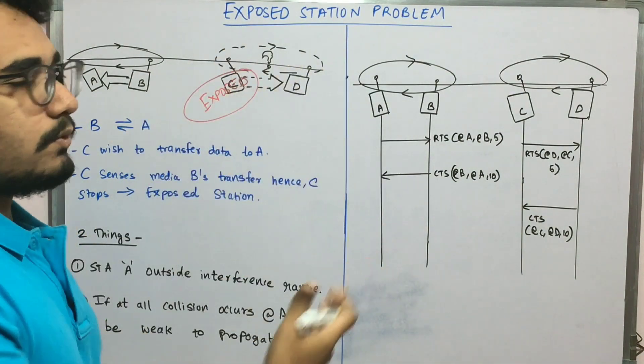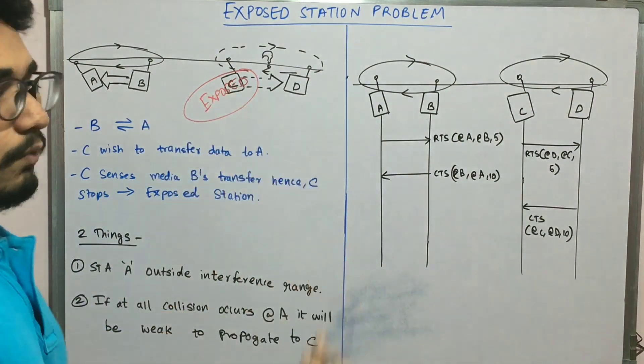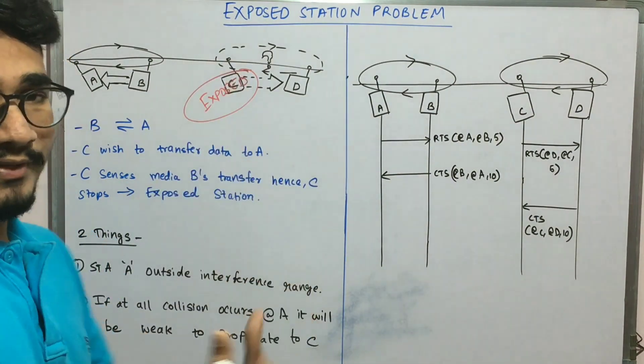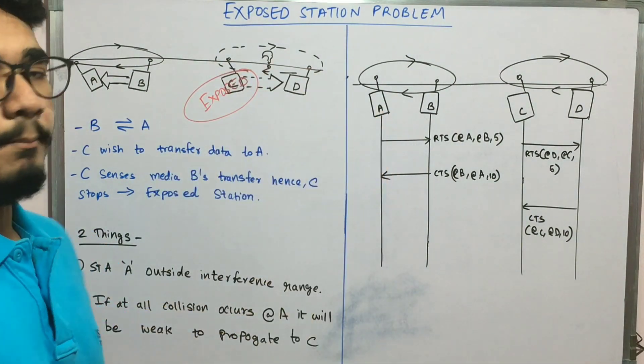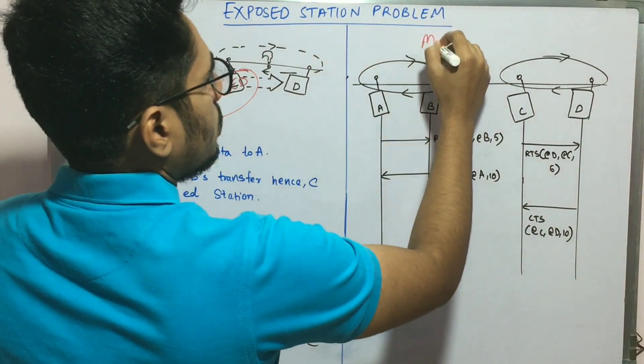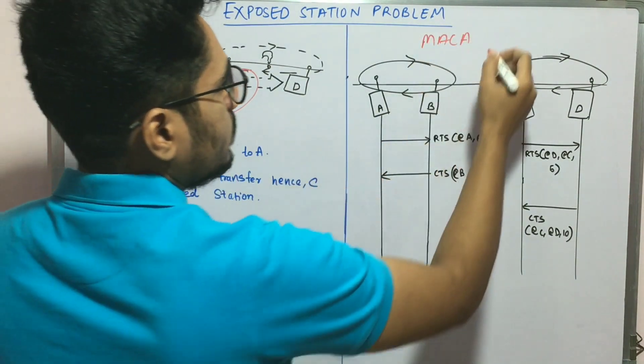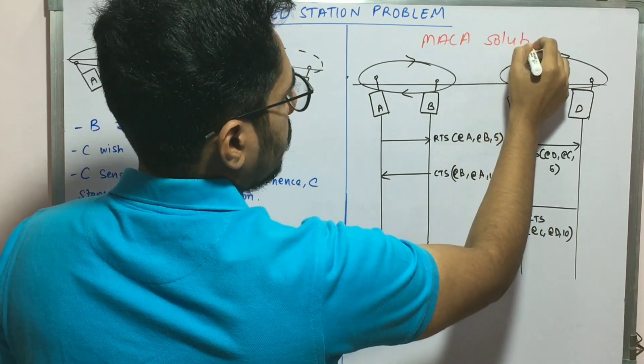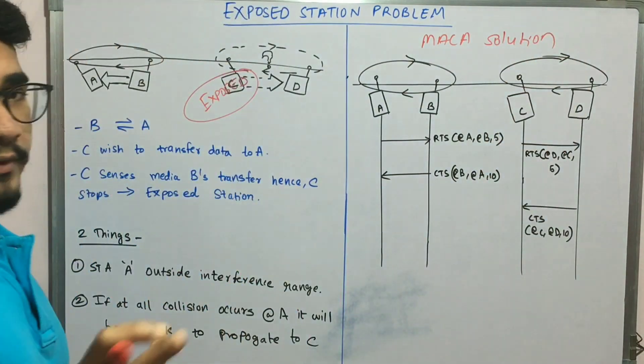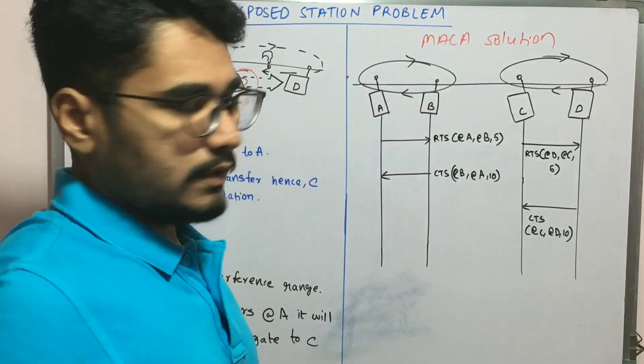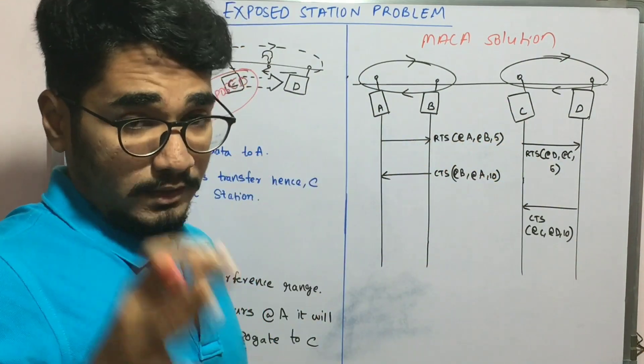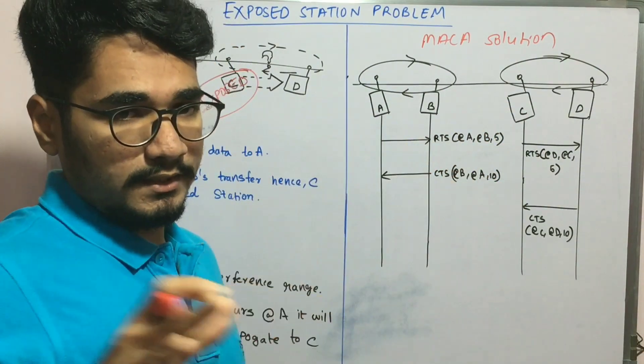To overcome this or to make communication happen between C and D, we use the MACA solution. MACA is Multiple Access Collision Avoidance solution or technique. As we already saw in the hidden terminal problem, we have two signals: Request to Send (RTS) and Clear to Send (CTS).